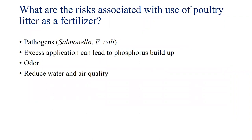Now let's talk about the risks associated with using poultry litter as a fertilizer. Like any manure, the most important risk from litter application comes from pathogens — specifically Salmonella and E. coli. Another challenge is odor, which can create complaints from neighbors. One of the other key challenges is that repeated application of litter over several years leads to buildup of phosphorus in the soils, which can create water quality problems.